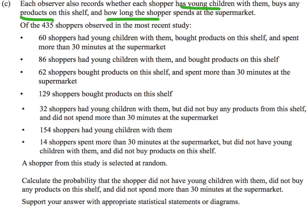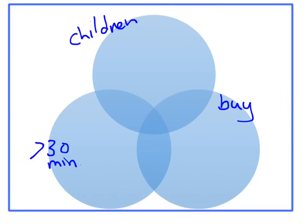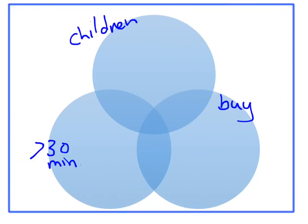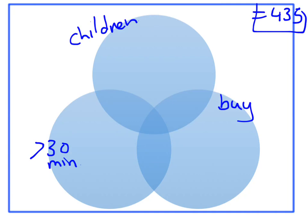We are told that we have 435 shoppers observed — that's our total. I'm going to put a big box around the whole Venn diagram, and everything inside has to add up to 435. We're told there are 60 shoppers that had young children, bought products, and spent more than 30 minutes. This is the intersection of all three circles, so right in the middle section there are 60 people.